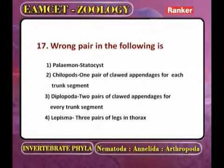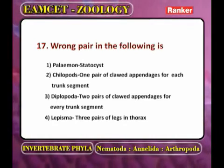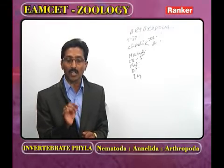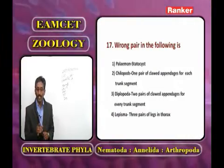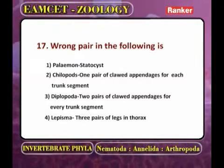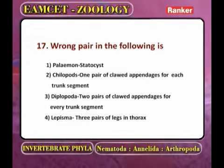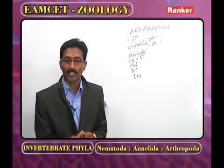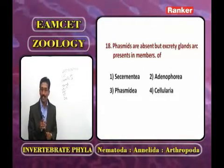Identifying the wrong pair: Palemon is a freshwater prawn — correct. Chilopoda has one pair of clawed appendages per trunk segment — correct. Diplopoda has two pairs of clawed appendages per segment — this is the wrong pair, as claws are absent in Diplopoda. Lepisma has three pairs of legs in the thorax — correct, as Lepisma is an insect. The wrong option is the third one, regarding Diplopoda.